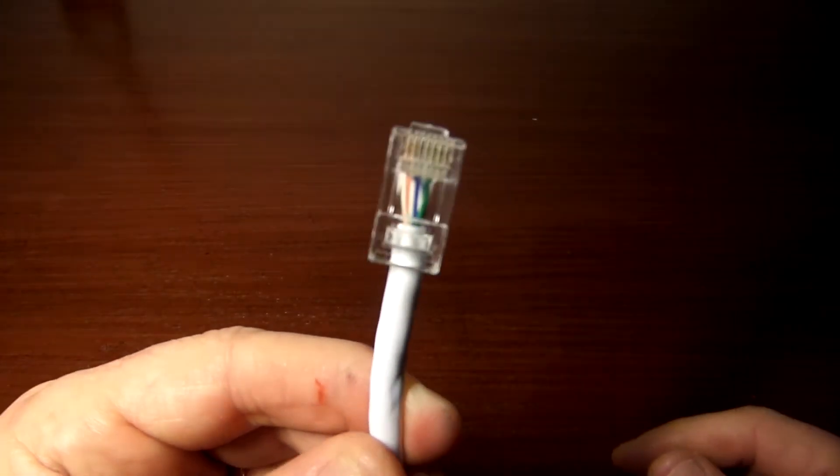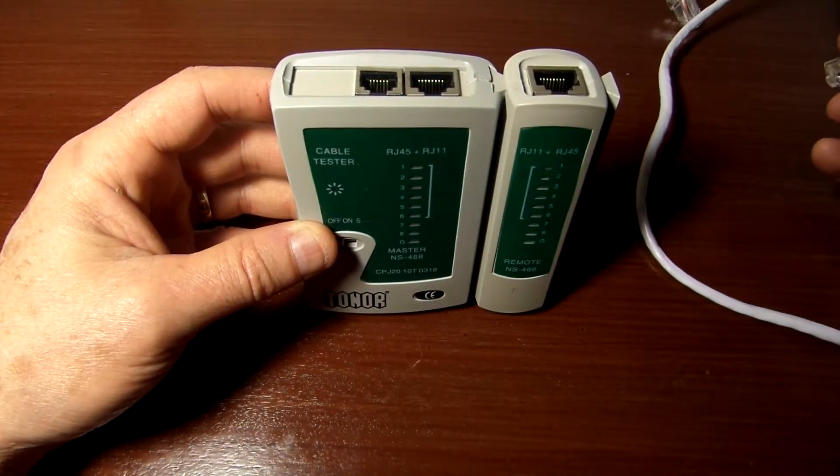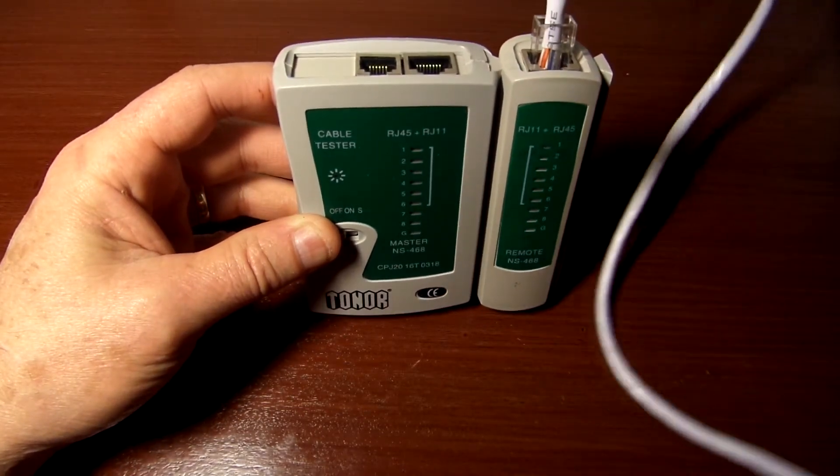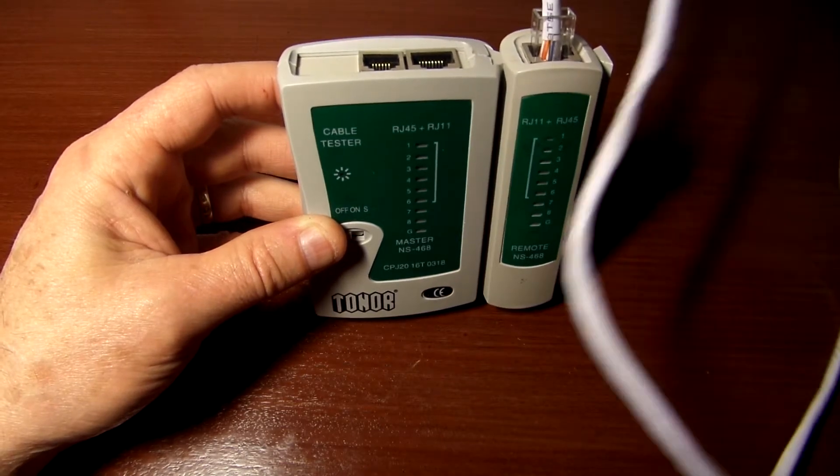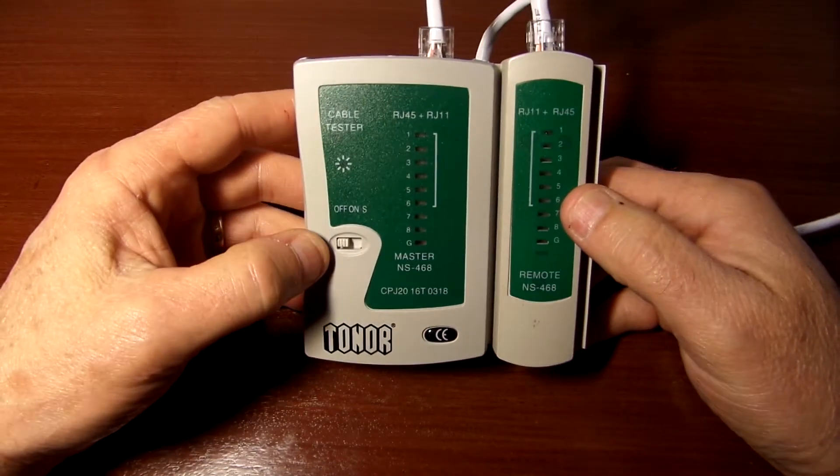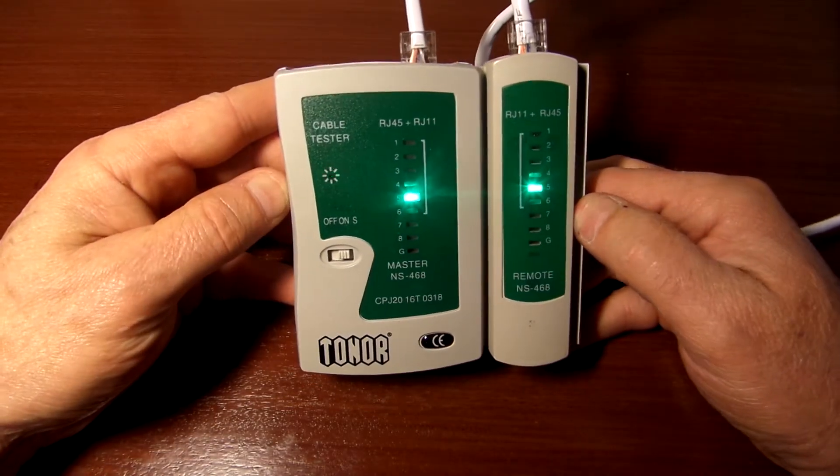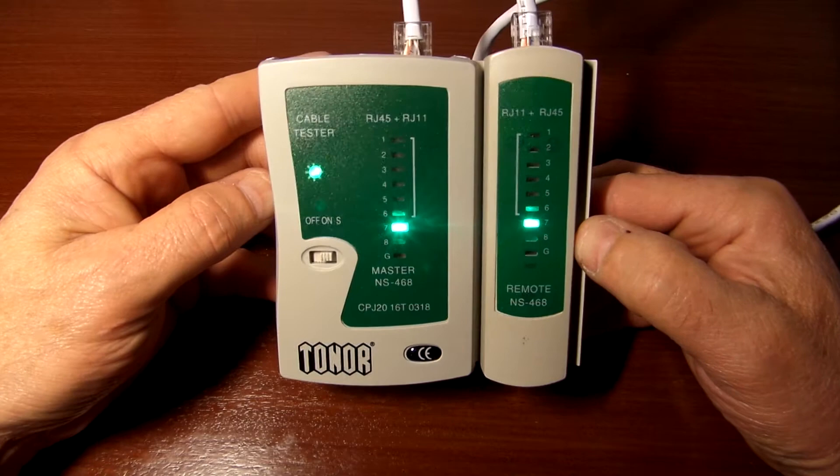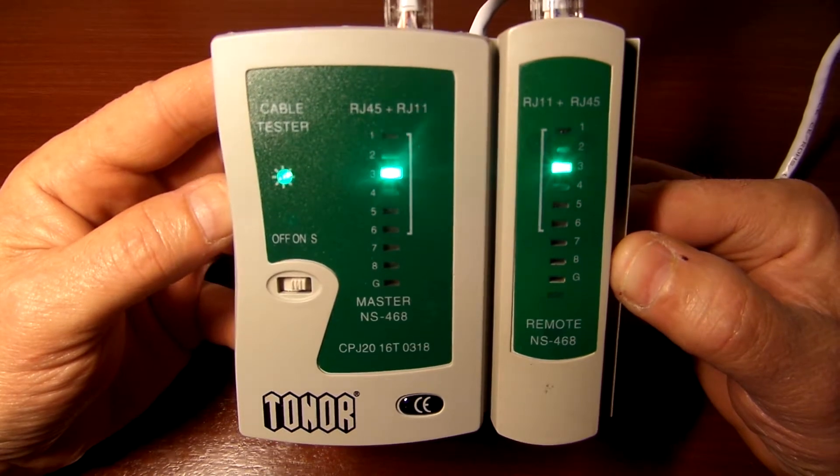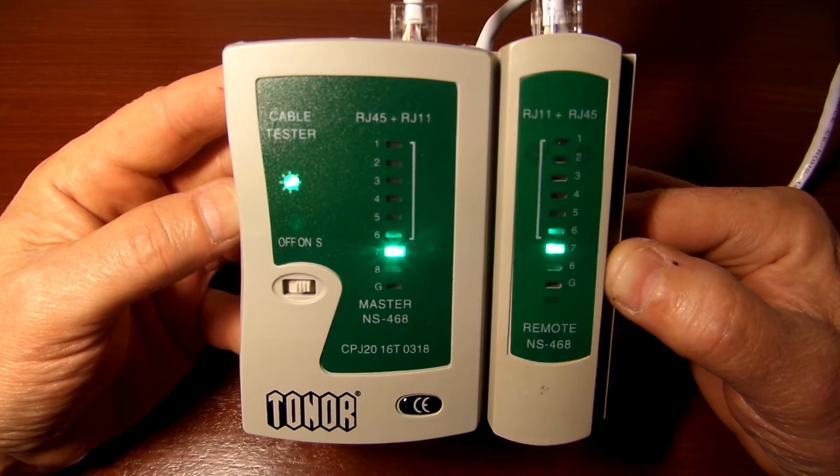With my connectors on, I'm going to go ahead and use my tester. Let's see how we did. I'm going to put it in the two sides. Let's switch it on slow. So we've got 1, 2, 3, 4, 5, 6, 7, 8. So eight connectors are showing continuity and also they're showing that they're in the proper sequence. So we know for sure that this line is good to go.